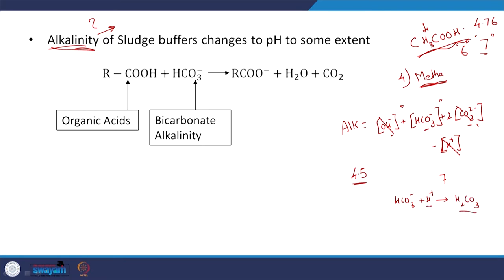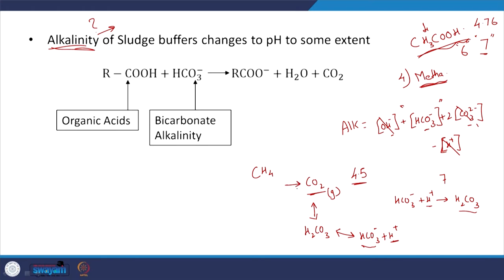Thus there is no free H+ in solution and pH is not affected. Another aspect to keep in mind is that during methanogenesis, acetic acid can be converted to carbon dioxide. This carbon dioxide when dissolved will be in equilibrium with H2CO3, and depending on pH, H2CO3 will be in equilibrium with HCO3 minus by releasing H+. So due to production of dissolved CO2, you are going to bring about a decrease in pH.